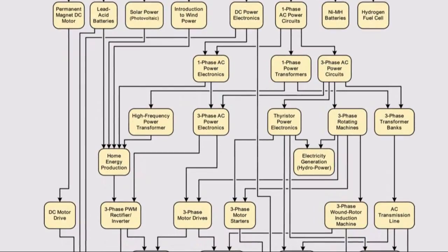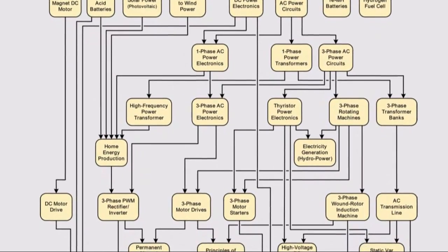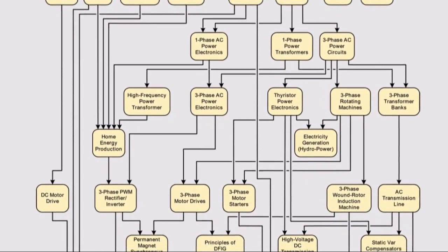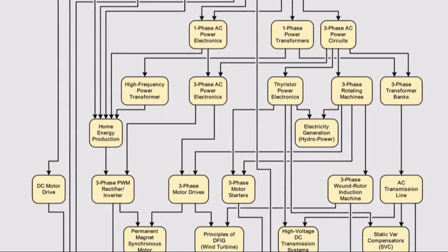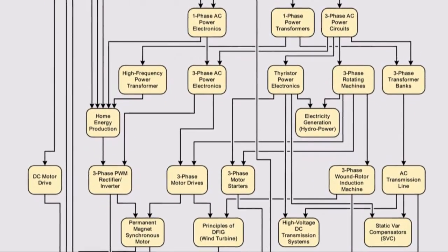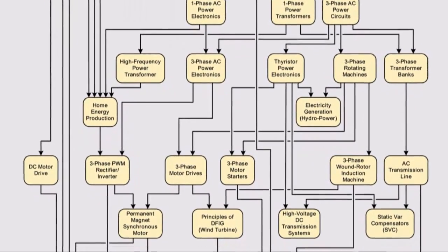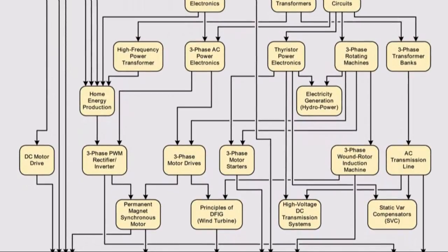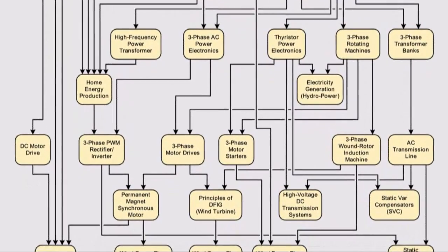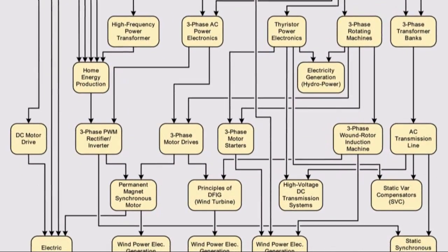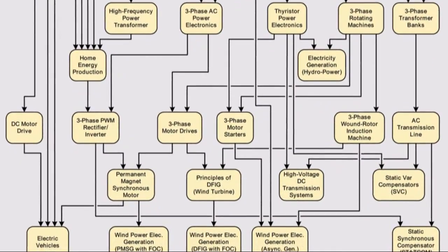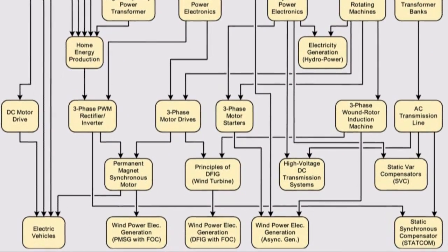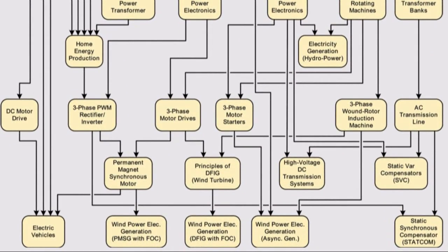It also covers smart grid and other renewable energies by just adding the needed additional components instead of adding full systems. It also includes large wind generators and asynchronous, DFIG, and permanent magnet synchronous generators.